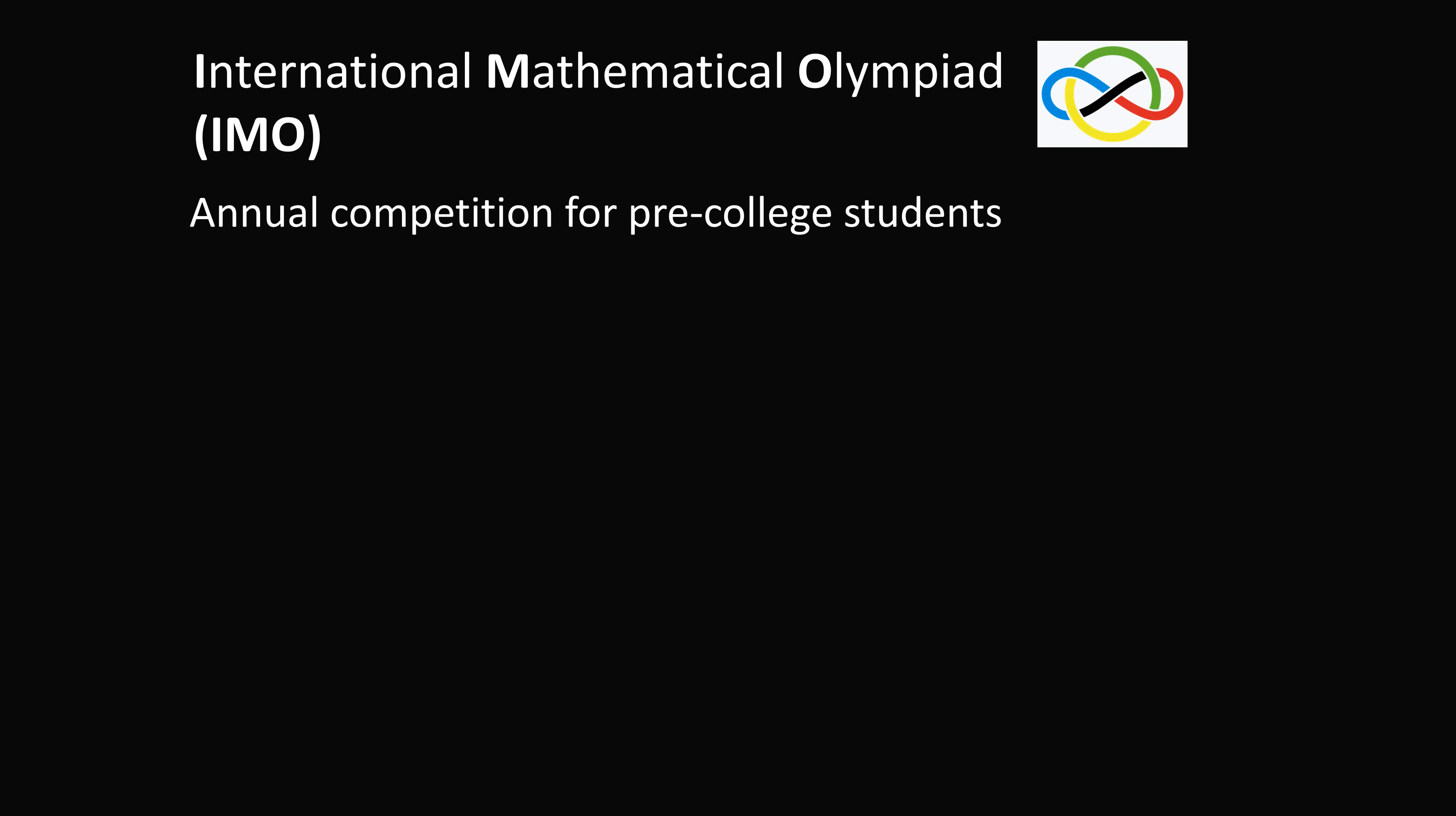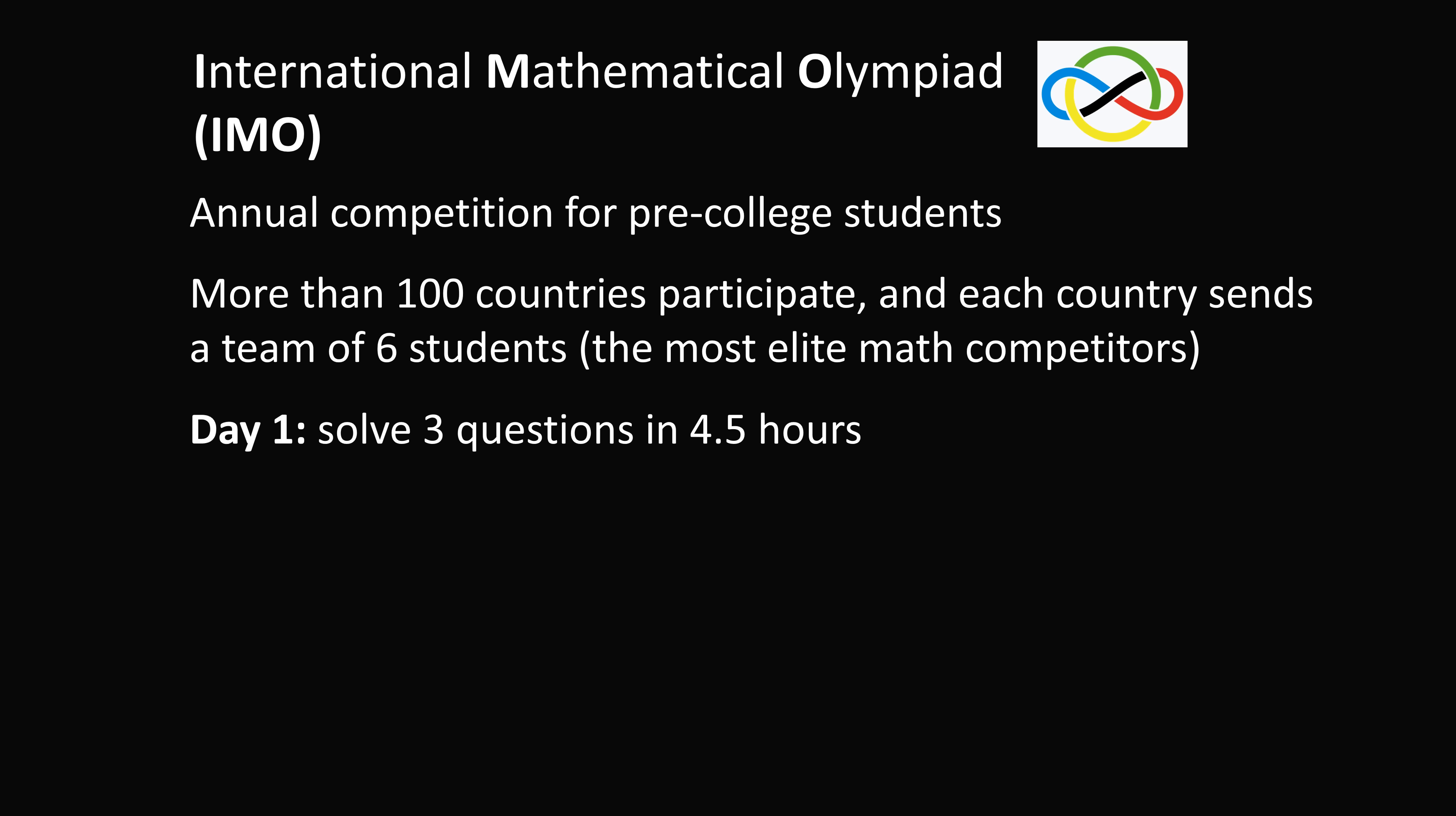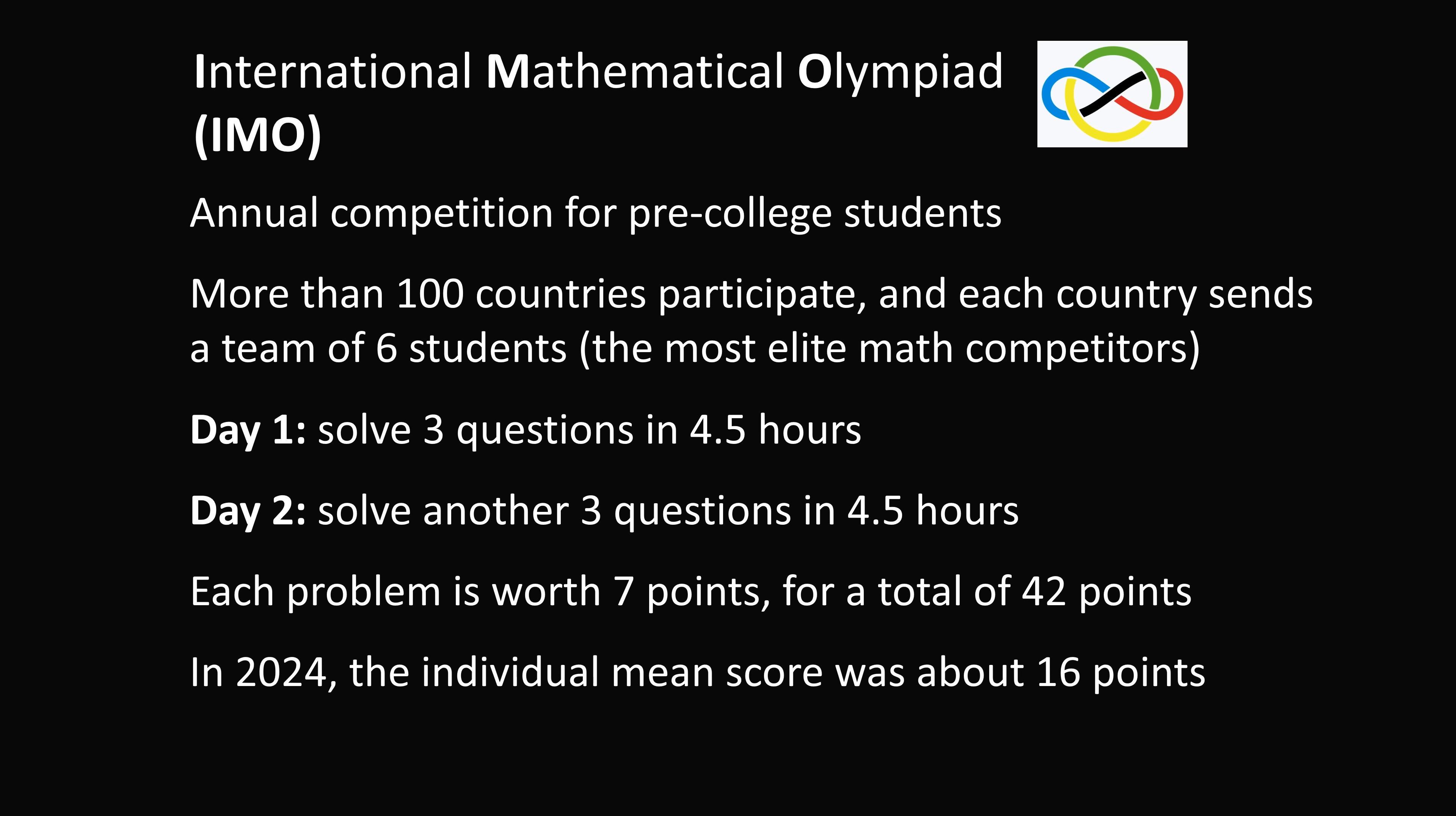The IMO is an annual contest for pre-college students that started with seven countries in 1959. Today it has expanded to over a hundred countries, sending teams of six students each. On each of two days, students solve three questions in four and a half hours. Each question is worth seven points. So out of a possible 42 total points, the average mean score is about 16. So even these students find these questions to be tough, and that makes them a great test for AI's math ability.